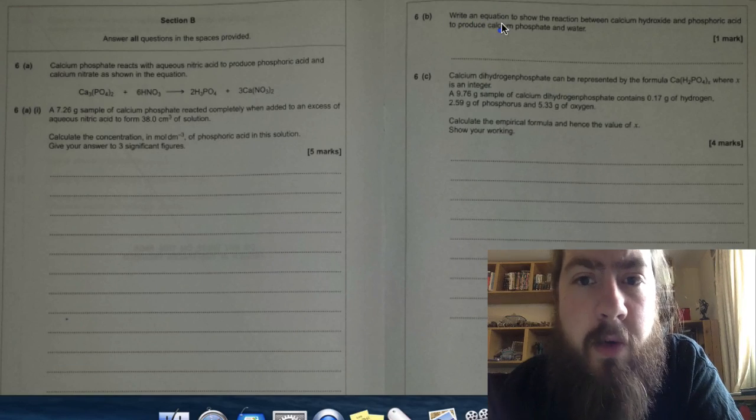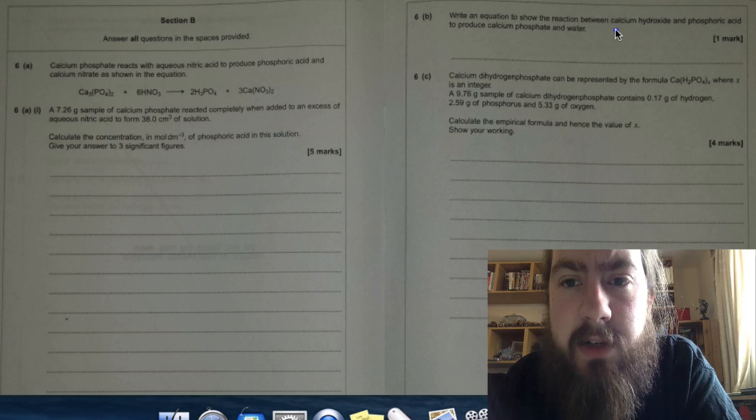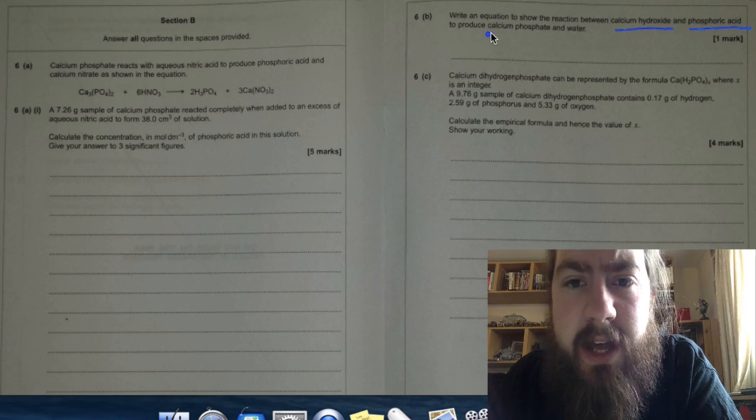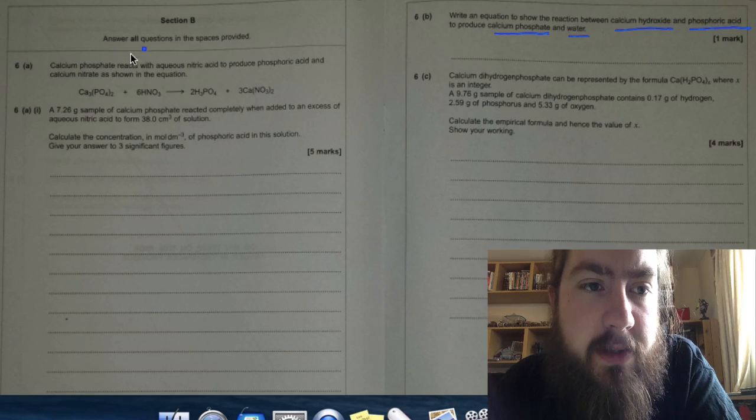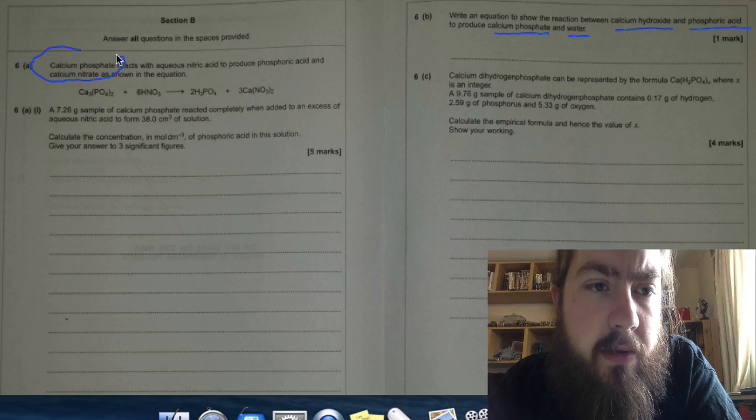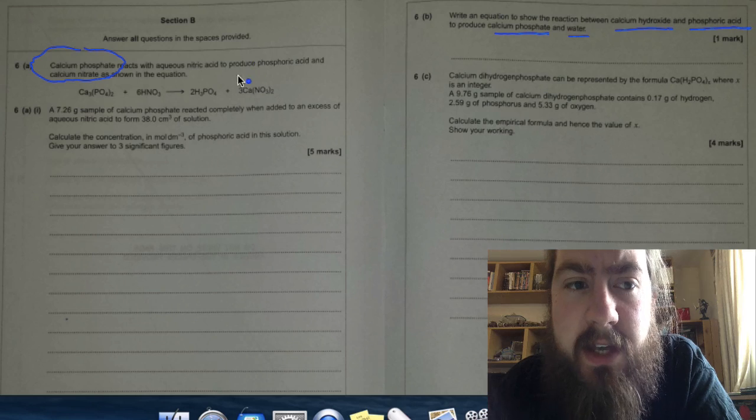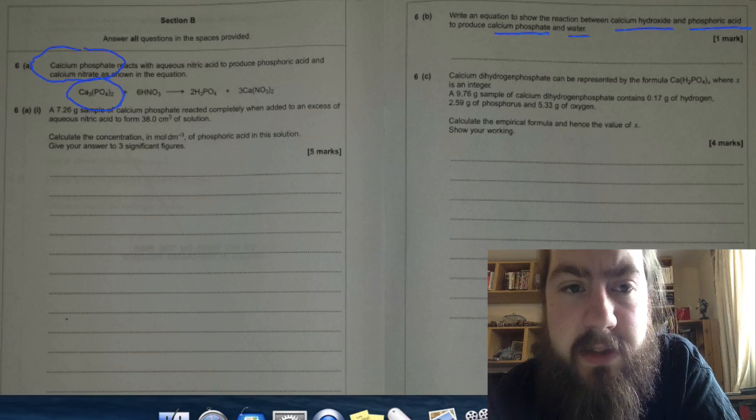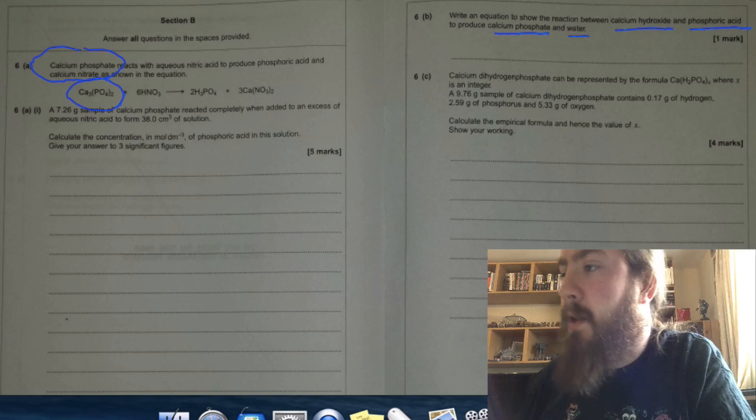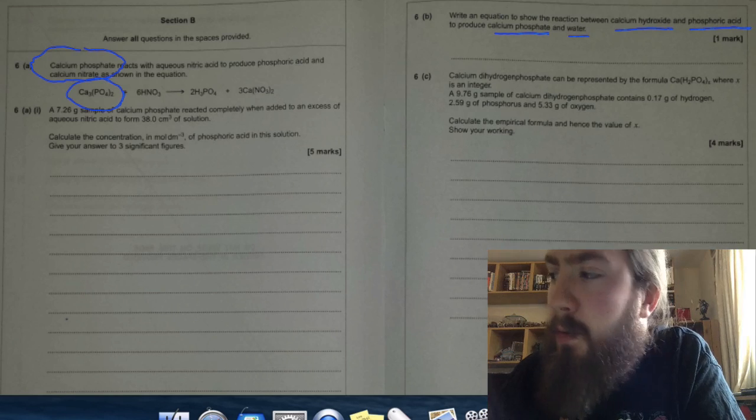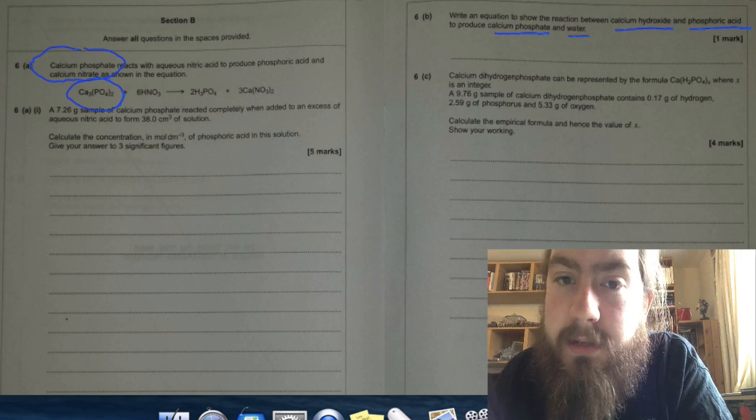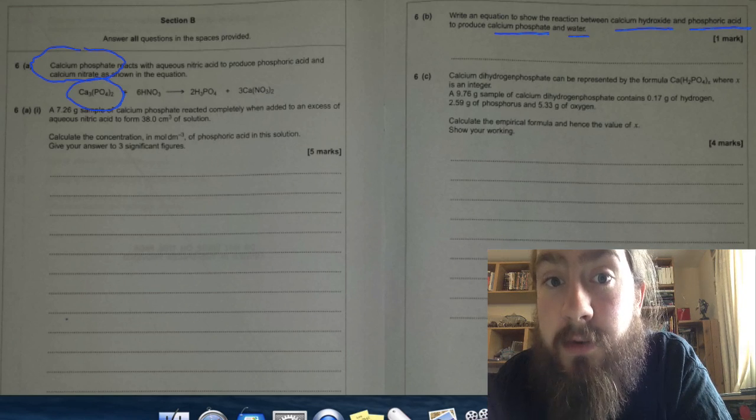Question 6b: Write an equation to show the reaction between calcium hydroxide and phosphoric acid to produce calcium phosphate and water. Calcium phosphate was the reactant we started off with in 6a, so we already know the formula for that. Calcium hydroxide is the one you're going to have to work out. Calcium forms 2+ ions and OH ions are 1-, so calcium hydroxide will be Ca(OH)₂.